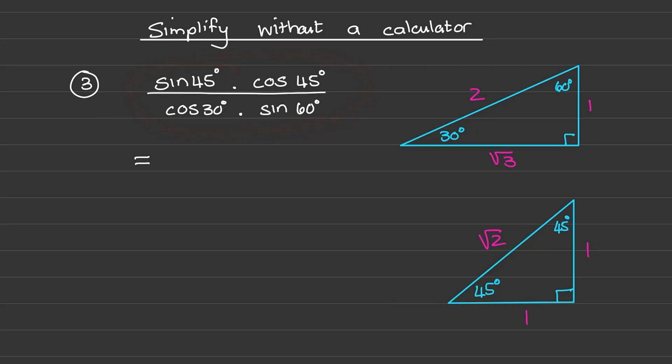So sine of 45 is 1 over square root 2 times the cos of 45, which is also 1 over square root 2, divided by the cos of 30, which is square root 3 over 2, times the sine of 60, which is also square root 3 over 2.